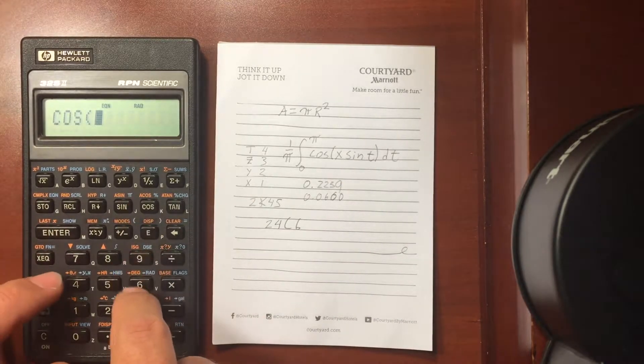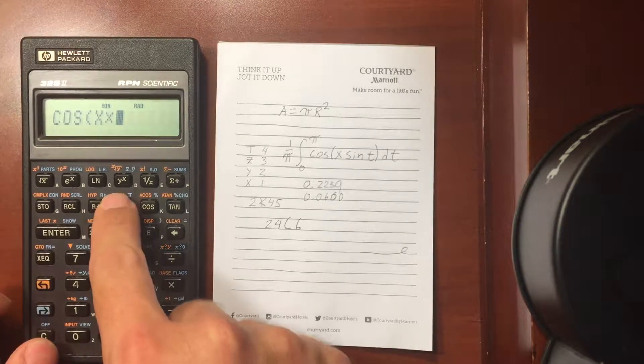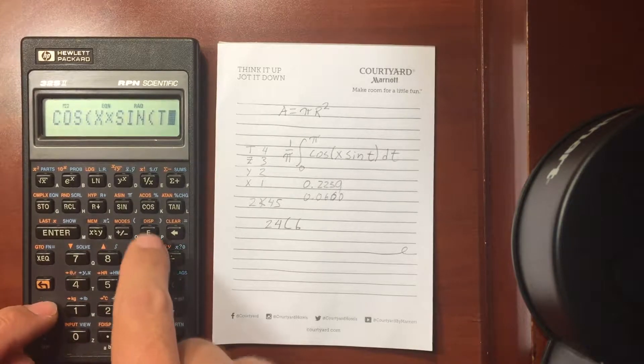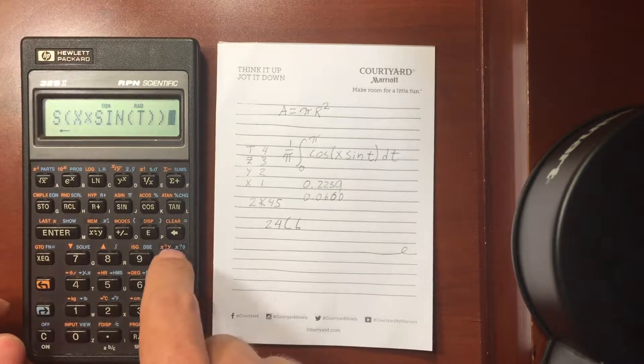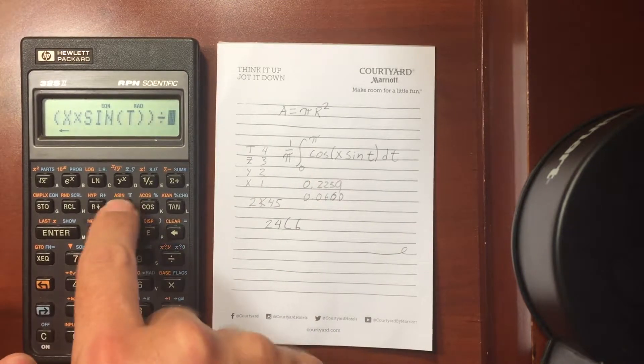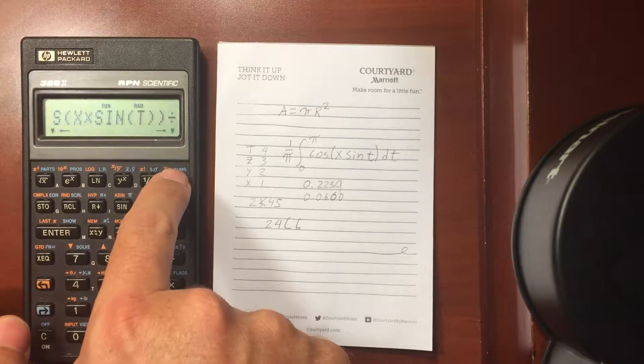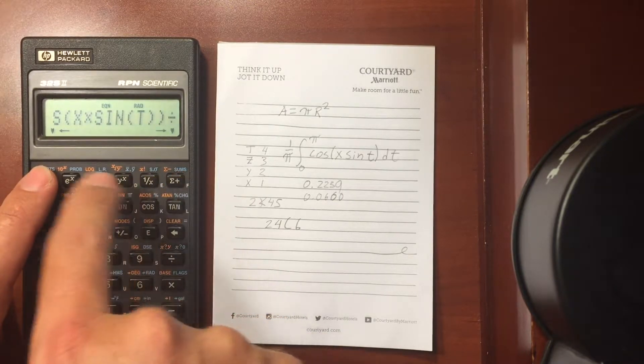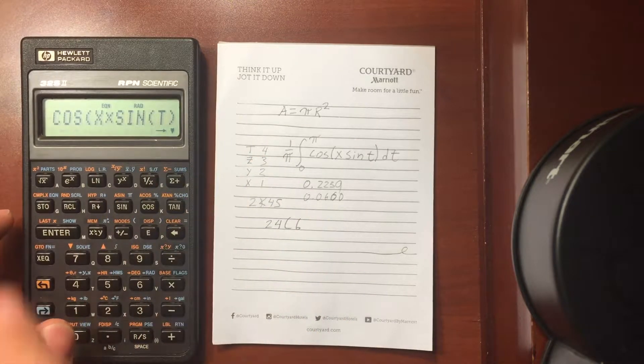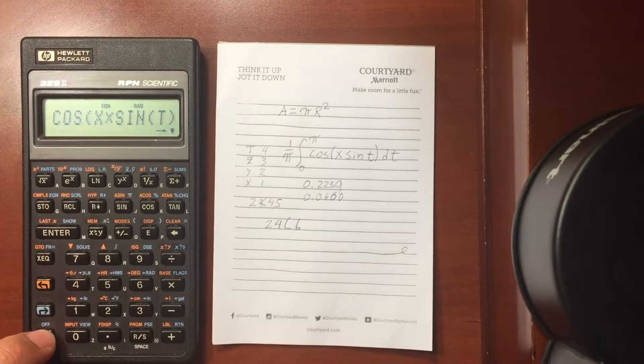So cosine of x, recall x, times sine of recall t, and I'm going to close off those parentheses, and then because I've got this 1 over pi term out front, I'm going to divide the entire thing by pi. Hit enter, there's my expression, and I can scroll over using the buttons here to see the rest of the function.